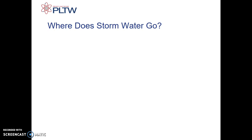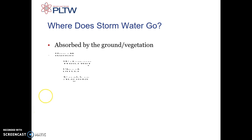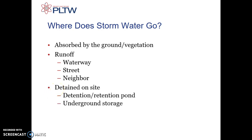We need to know where does stormwater go. It gets absorbed by the ground and also by vegetation, but not all of it gets absorbed. It also runs off into our waterways, might run off into the street, or might run off into our neighbor's yard.